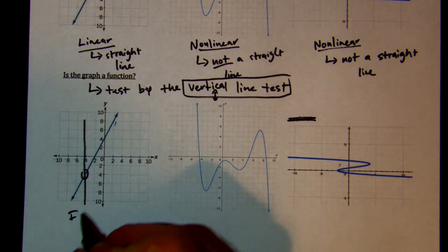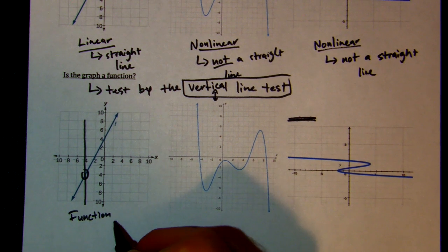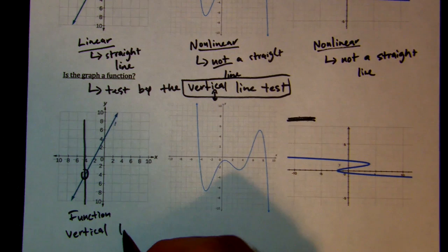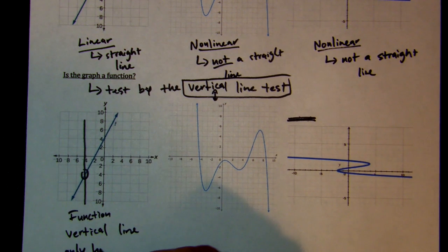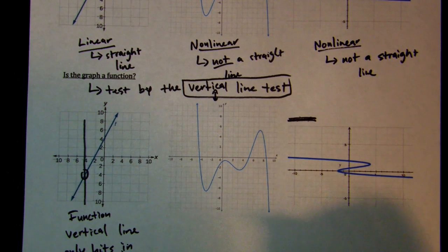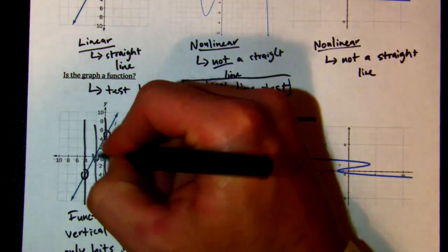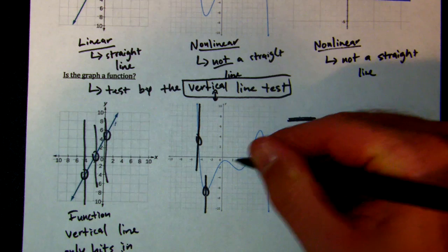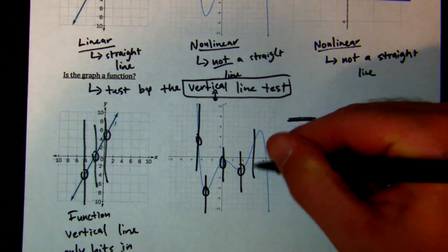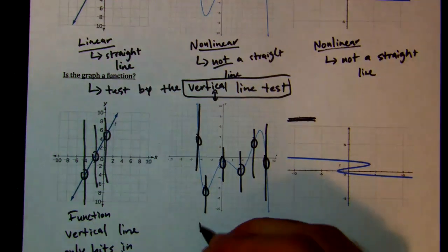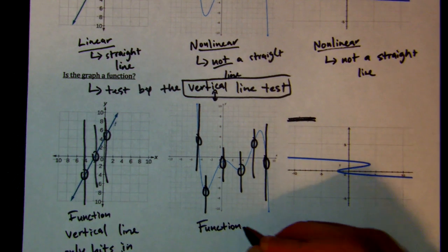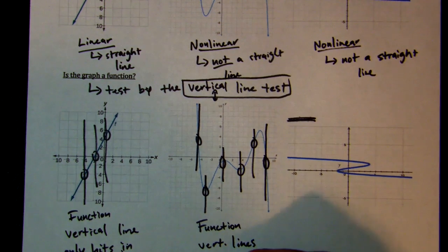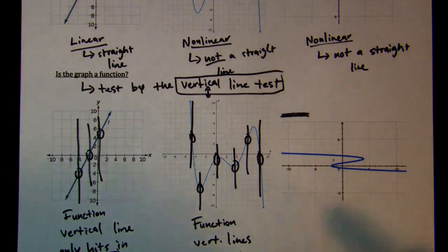For it to be a function, the vertical line can only hit the graph in one spot. This first one is a function because our vertical line only hits in one spot. For the second graph, it only hits in one spot across all positions as well — you see the trend. This one is a function. Our vertical lines hit only once, so it passed the vertical line test and it's a function.